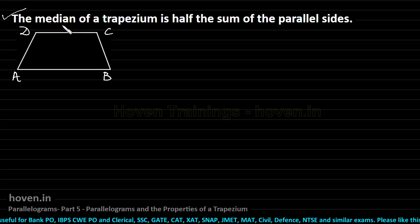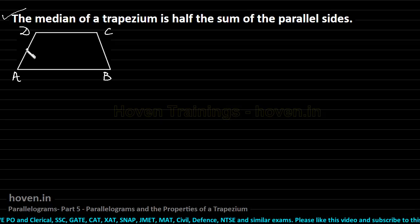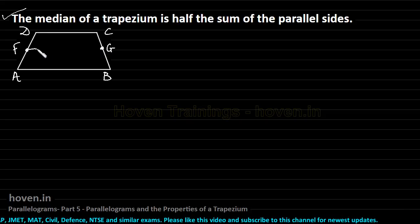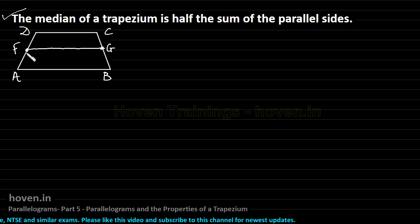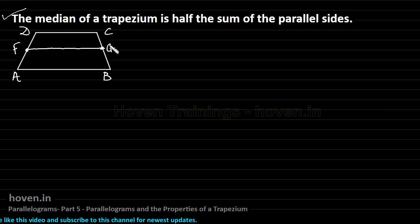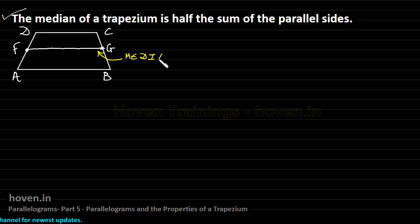Now, what is a median? The midpoint of the non-parallel side — let us say point F — and the midpoint of the other non-parallel side, if they are joined together, then this line joining the midpoints of the non-parallel sides is called a median. So this line is the median.